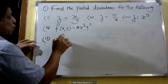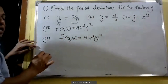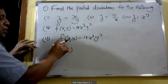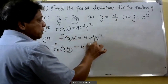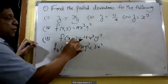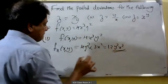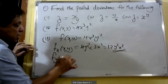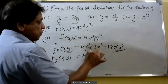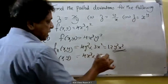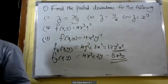Fourth problem: f(x,y) = 4x³y². The partial derivative fx with respect to x: 4y² is treated as constant, derivative of x³ is 3x², so fx = 12y²x². For fy, partially differentiating with respect to y: 4x³ is constant, derivative of y² is 2y, therefore fy = 8x³y. These are the partial derivatives of the above functions.